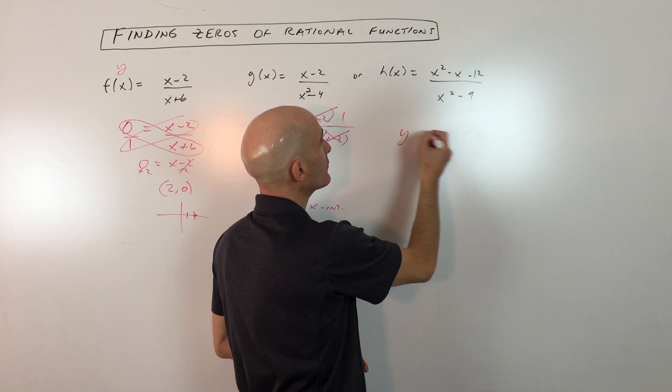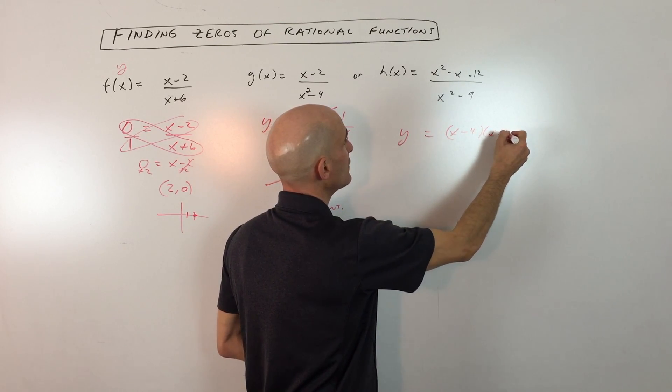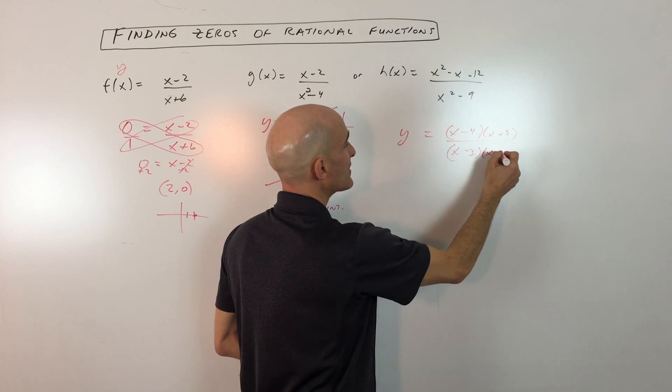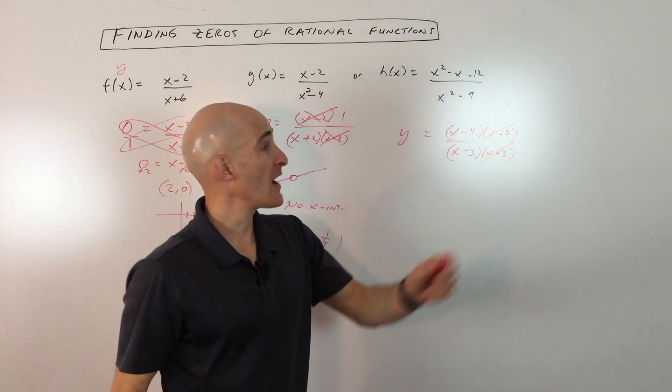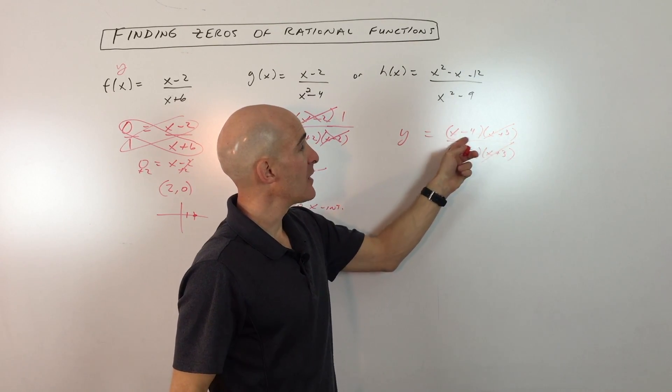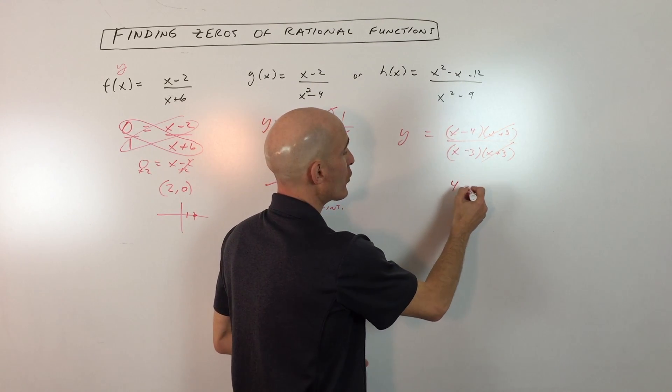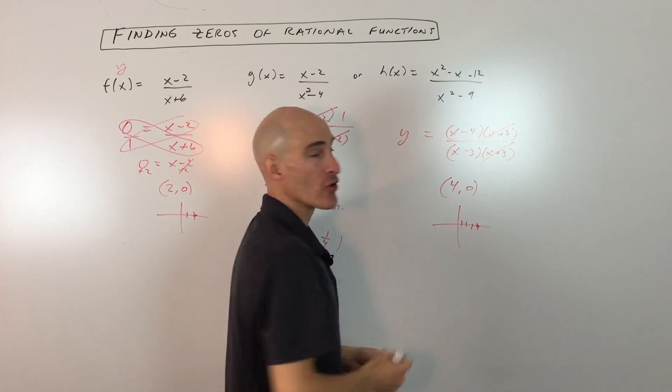Same thing—factor the numerator: x minus 4, x plus 3. Factor the denominator, it's a difference of two squares: x minus 3, x plus 3. Again, notice the x plus 3s are canceling, so we're not going to have a zero at negative 3. If we set the numerator to zero, we'll have an x-intercept at 4, or a zero at 4. This graph crosses at 4 comma 0.